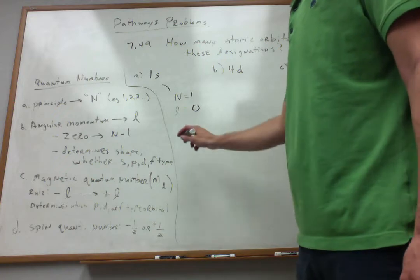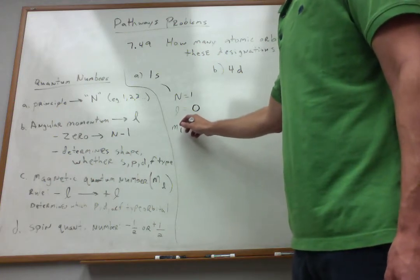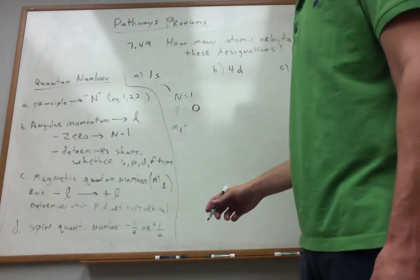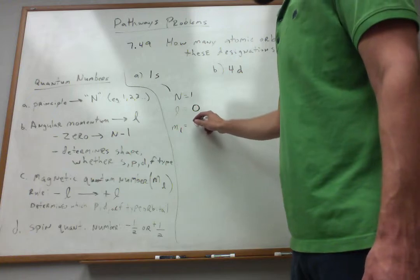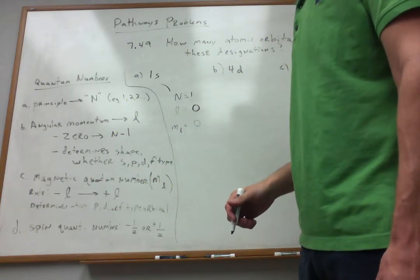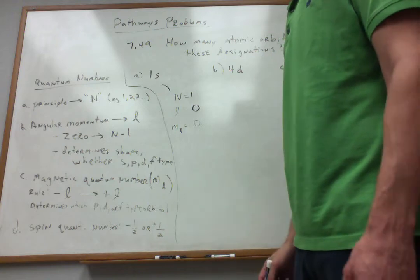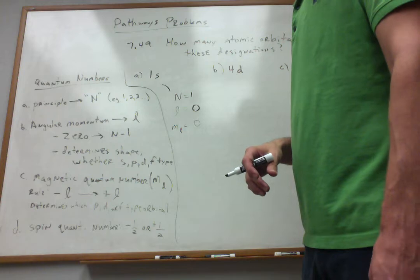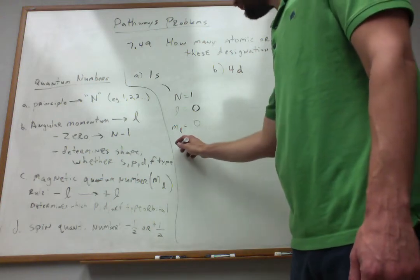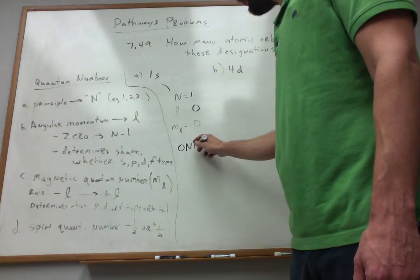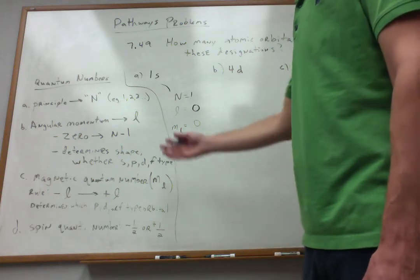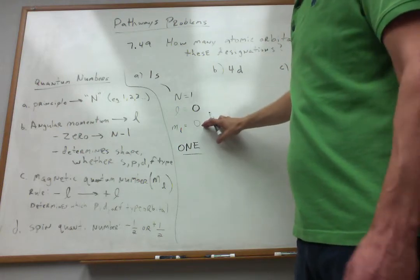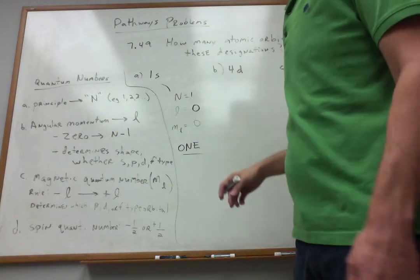So if that's the case, what's the possible values for my m sub l? Well, it looks like I can go from negative l to positive l. Well, l is 0. So I guess my only option there is 0 as well. Now, for the spin quantum number, I can have plus 1 half and minus 1 half. So I can put two electrons into this orbital. But it looks like I only have one possibility for this 1s orbital. So I've got an s-type orbital and quantity one of them. So I've got 1.